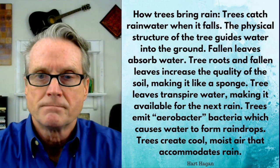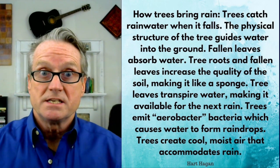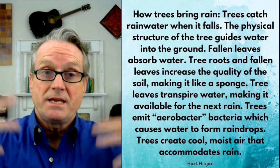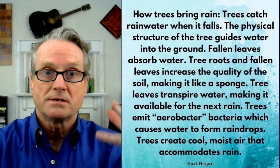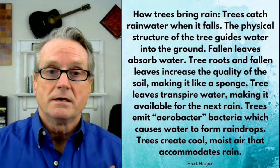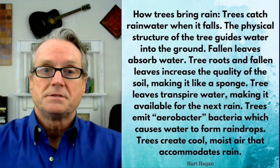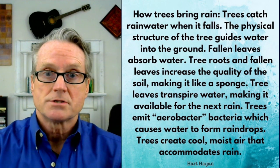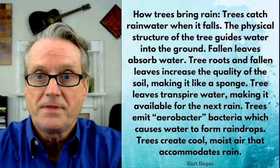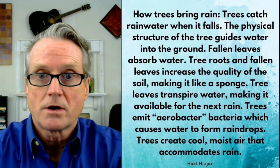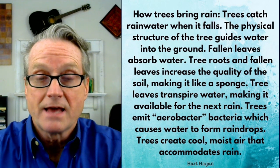The aerobacter — it's like the tree says 'rain on me.' The tree emits this aerobacter into the sky and it tends to cause rain. They emit the aerobacter which causes water to form raindrops.